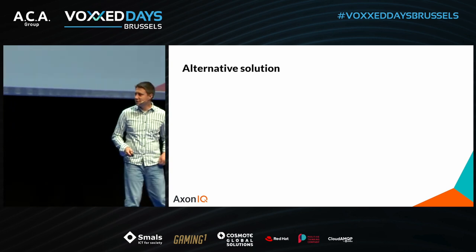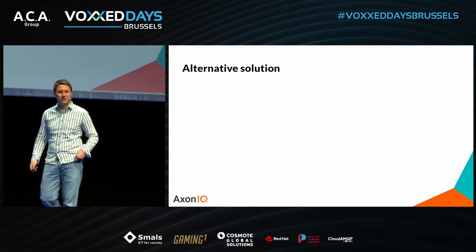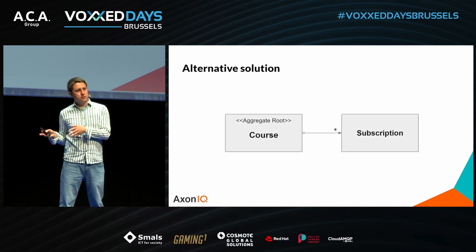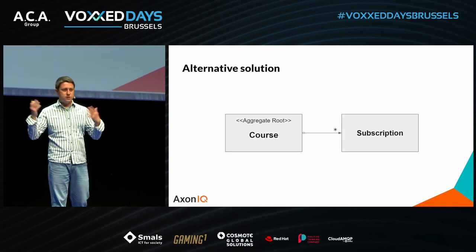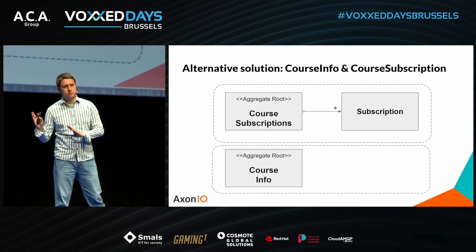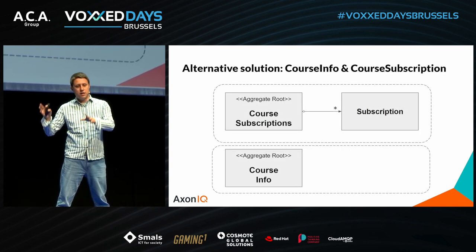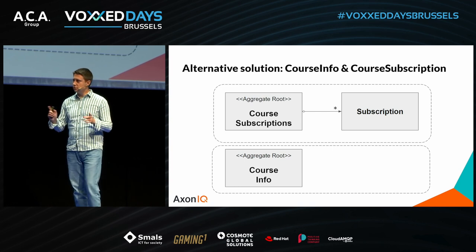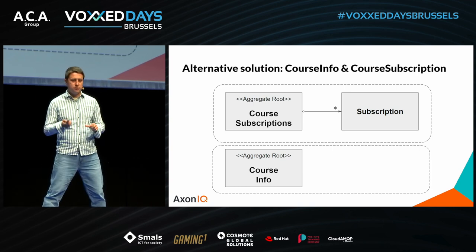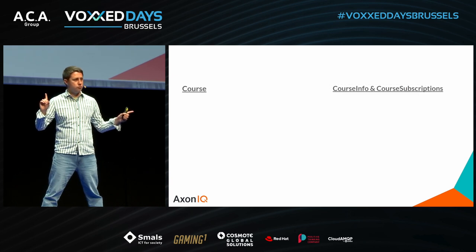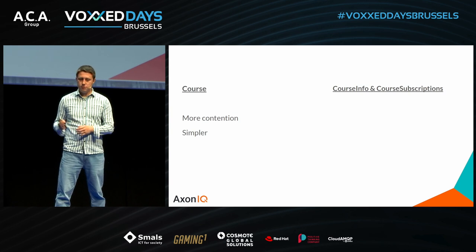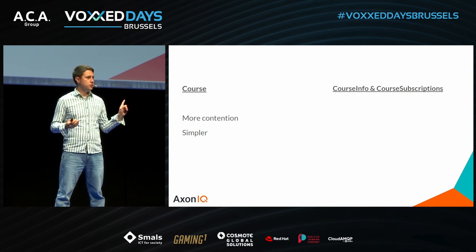Let's try to propose an alternative solution. Instead of a single aggregate handling both course and subscriptions, we introduce two aggregates: one handling course subscriptions and one handling course info and details. Comparing both approaches: the single course aggregate had more contention but was simpler — a single unit to manage. With course-info and course-subscriptions we have less contention, as commands are directed to the correct aggregate and only necessary data is loaded.